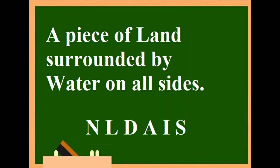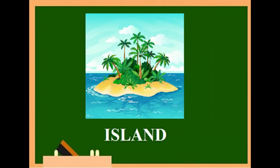Third: a piece of land surrounded by water on all sides. Children, guess this one — N-L-D-A-I-S. Yes, it is an island.